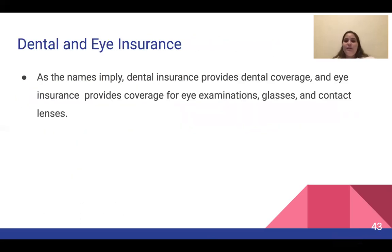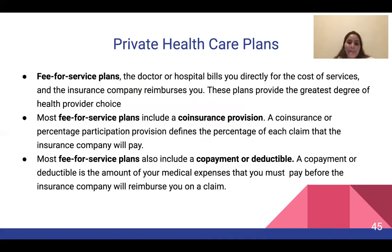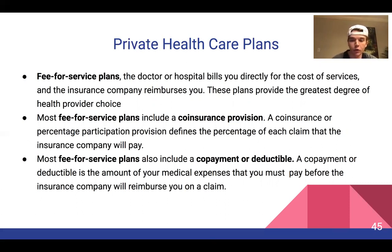Dental insurance provides dental coverage, and eye insurance provides coverage for eye examinations, glasses, and contact lenses. For basic health care, there are essentially two choices: fee-for-service or traditional indemnity plans, and managed health care or prepaid care plans. Under a fee-for-service plan, the doctor or hospital bills you directly and the insurance company reimburses you. These plans usually include a coinsurance provision that defines the percentage of each claim the insurance company will pay, and most also include a copayment or deductible.